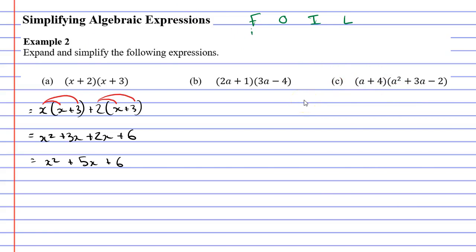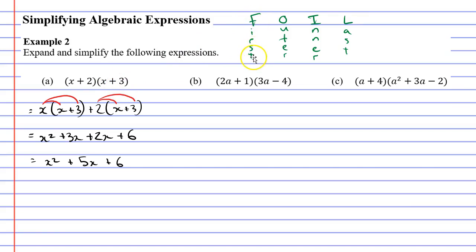FOIL stands for First, Outer, Inner, and Last. I'm going to complete question A again using the FOIL method. According to FOIL, we focus on the first terms in each set of brackets — the x in the first set and the x in the second set. Multiplying them: x times x gives us x squared. That's the First step.